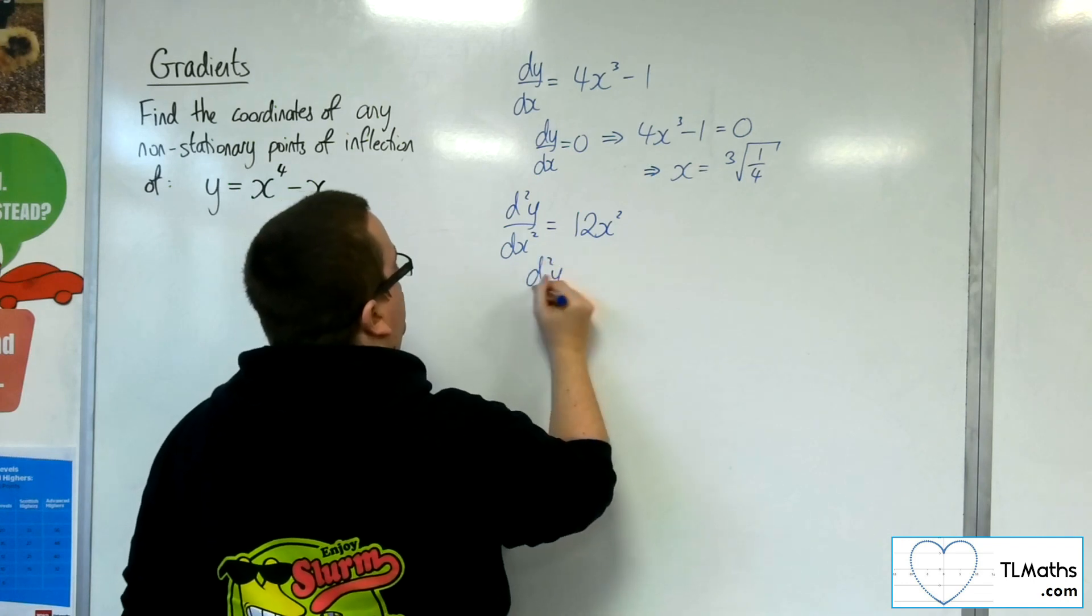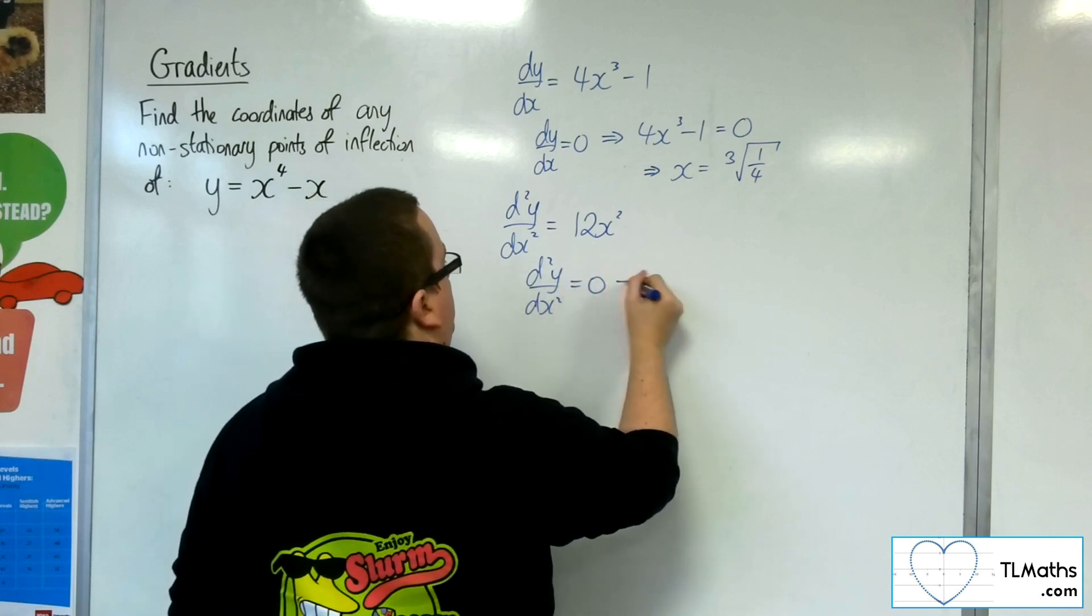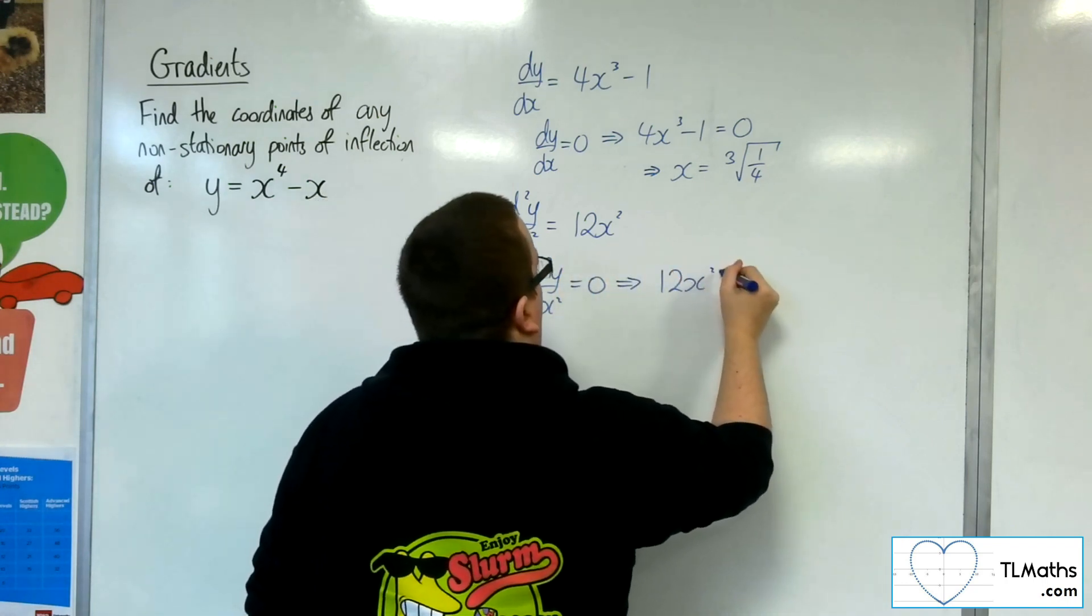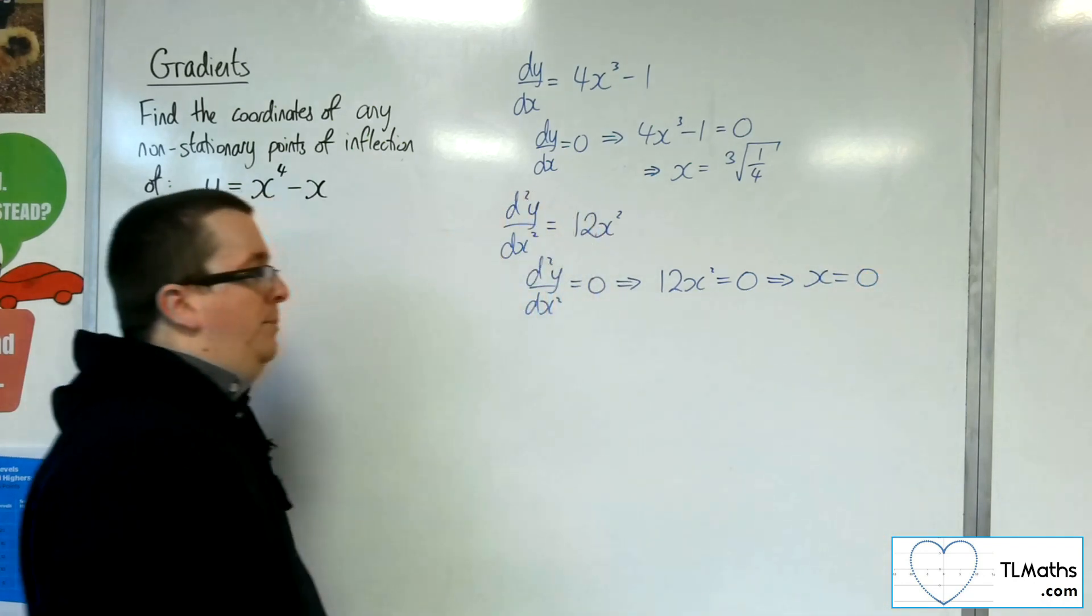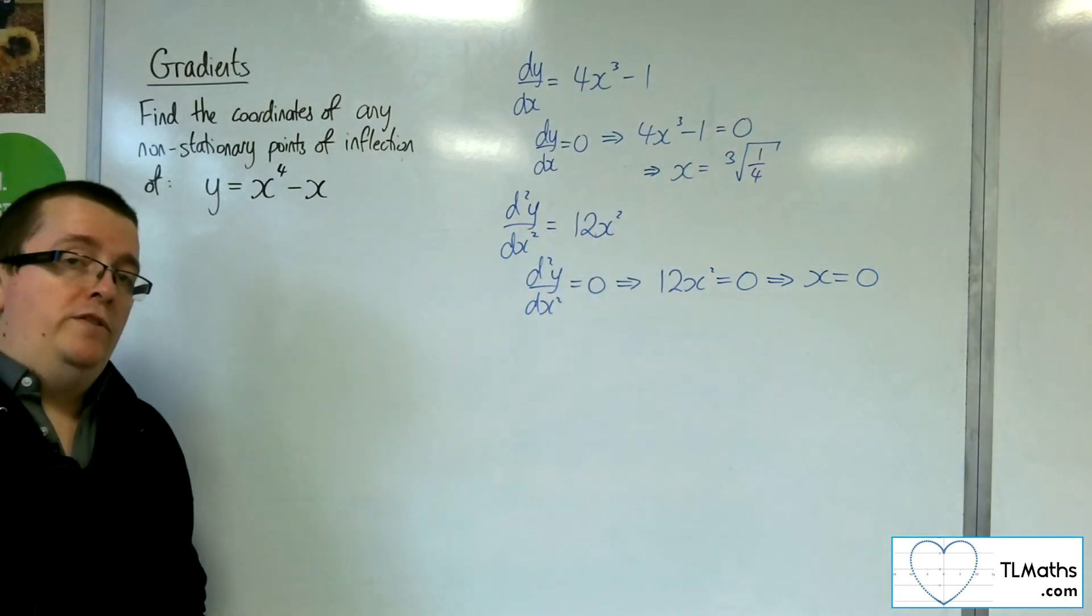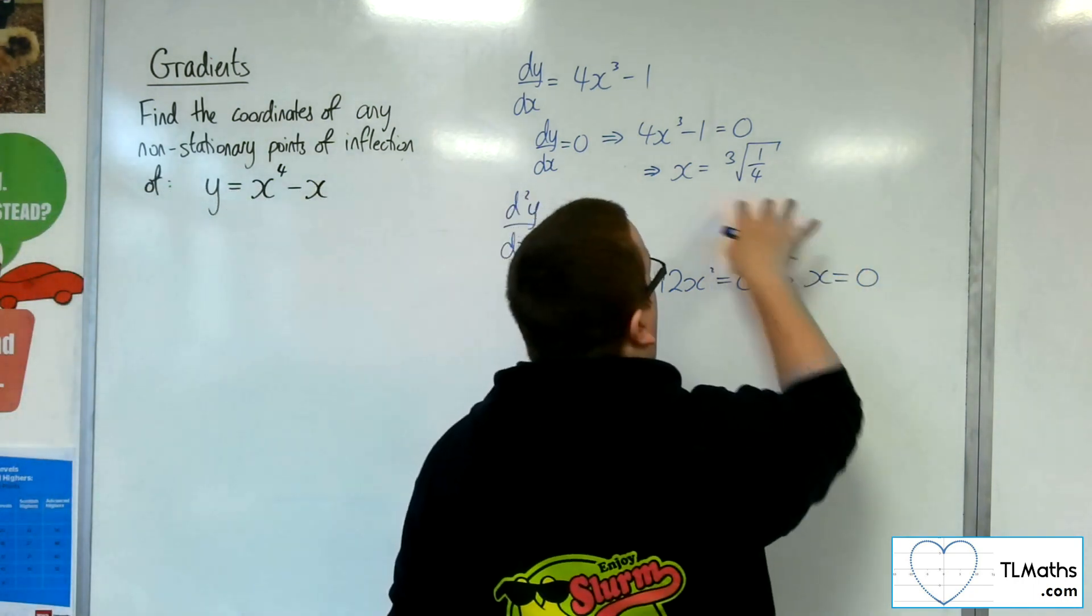Now the second derivative is 0 when x is 0. So the only possible non-stationary point of inflection is when x is 0, because that's definitely not a stationary point.